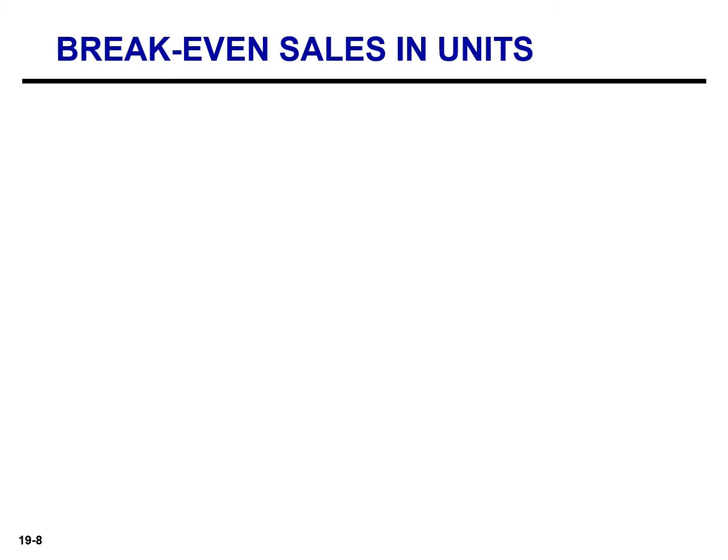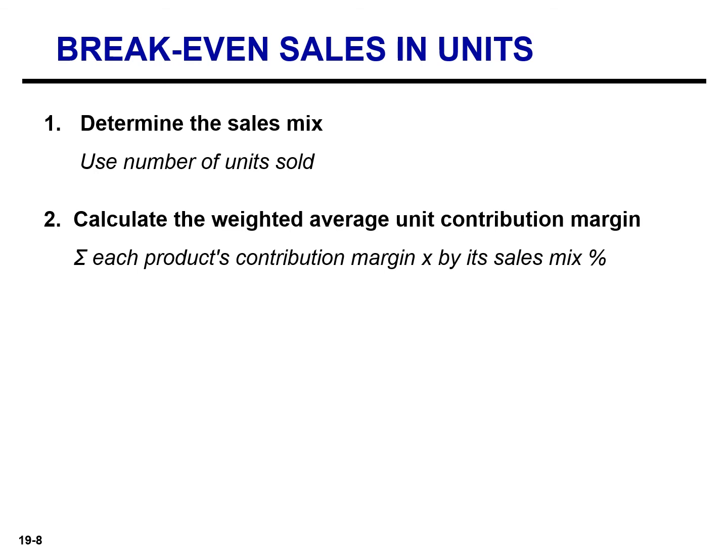Let's review how to calculate break-even sales in units for multiple products. Step one: determine the sales mix, based on the number of units sold of a given product relative to total units sold. Step two: calculate the weighted average unit contribution margin — think of this as the average of all products' unit contribution margins, weighted by the sales mix. It is calculated by multiplying each product's contribution margin by its sales mix percentage and then adding the results for each product.